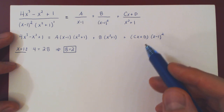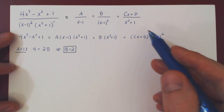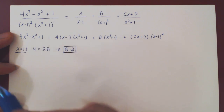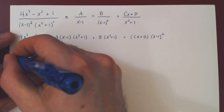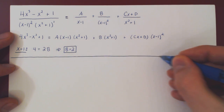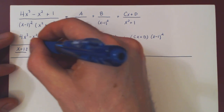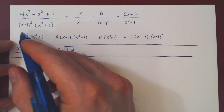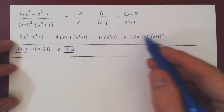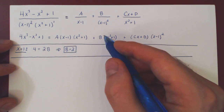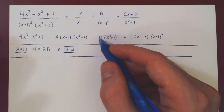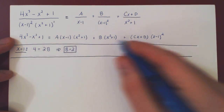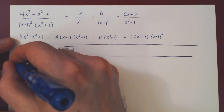We have to multiply out and regroup similar powers of x: all constant terms, multiples of x, x squared, and x cubed. Now we use the second method. Let's multiply out and regroup — and we won't leave b as b, since we now know b equals 2.